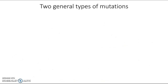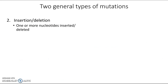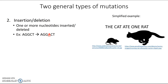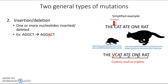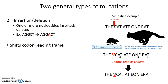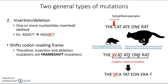The other general type of mutation you need to know about is insertion or deletion. This is what occurs when one or more nucleotides get inserted into or deleted from a DNA sequence. An example would be the insertion of the letter A into the original sequence AGGCT, so it becomes AGGACT. Using the same three-letter word sentence 'The cat ate one rat,' instead of swapping a letter, if we insert a letter, the cell reads codons in triplets — so the reading frame shifts, and what the cell actually sees becomes utter gibberish. For this reason, insertion and deletion mutations are known as frameshift mutations.